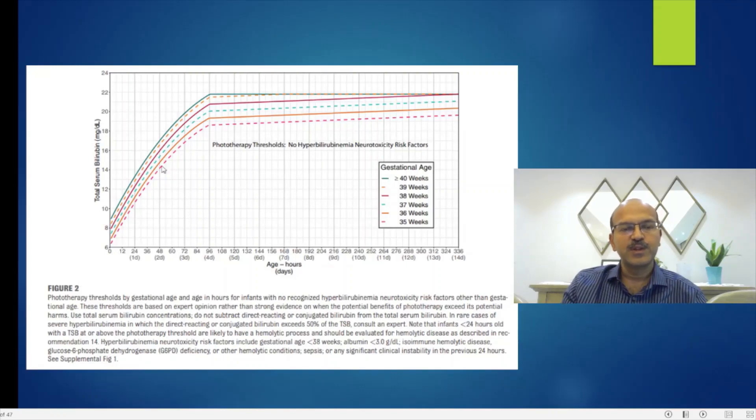This is the new chart for babies without neurotoxicity risk factors. You have different lines for 35, 36, 37, 38, 39, and more than 40 weeks.